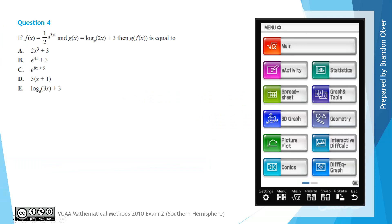So for Question 4, we have two functions, or two rules: f of x, which is 1 half e to the power of 3x, and g of x, which is log e of 2x plus 3. And our question is, g of f of x, which is a composite function, is equal to one of the following.